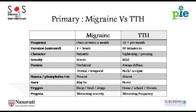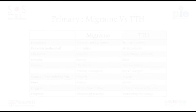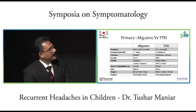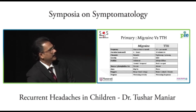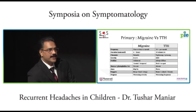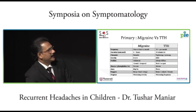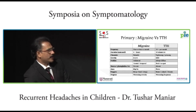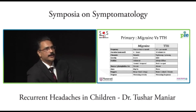In this single slide, the differentiating points of migraine and tension type headache are almost like a mirror image. High frequency and shorter duration suggest tension headache. Tightening or pressing pain also suggests tension headache. On the other hand, if the pain is unilateral, severe, associated with nausea, photophobia, phonophobia, and possibly aura, you think in terms of migraine.